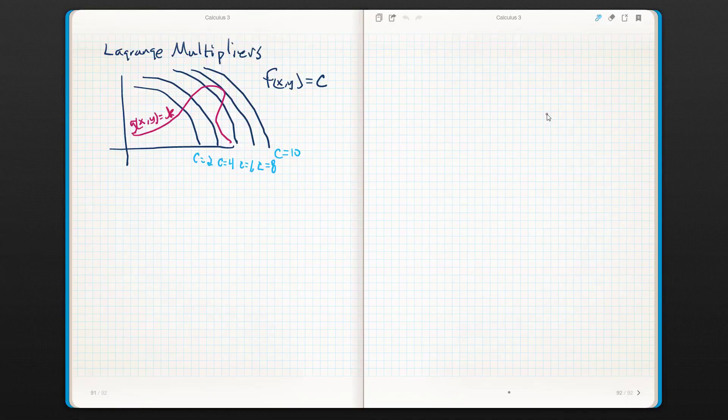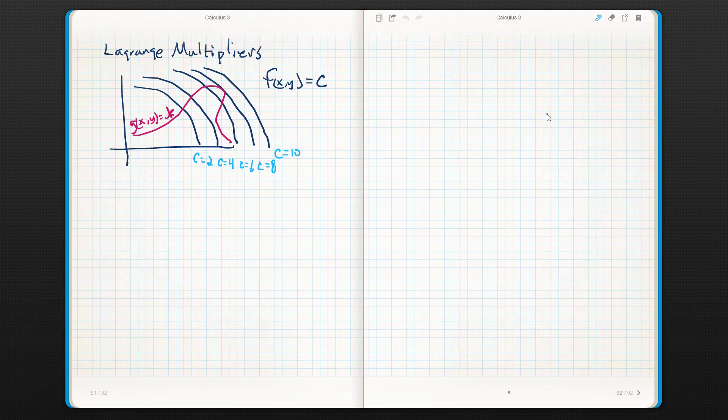Hey everybody, it's Ripley back again. Today we're going to talk about Lagrange multipliers. Lagrange multipliers are a technique for optimizing functions given a specific constraint.